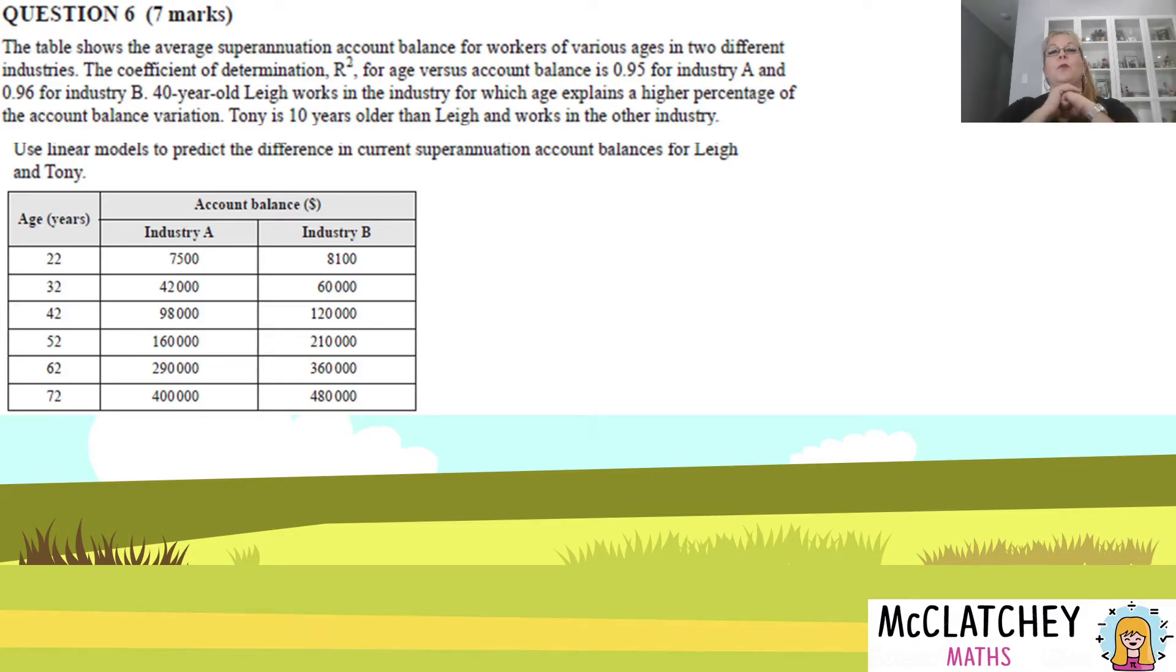This would be a complex unfamiliar question. It's talking about bivariate data, but they've thrown in that word superannuation, which is automatically going to make you think it's a financial maths question. I guarantee some people jumped straight to financial maths formulas and tried to use an annuity formula because superannuation is an annuity. However, it's nothing to do with that at all. It's purely about bivariate data.